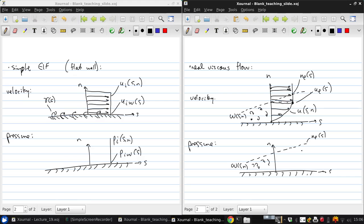So again, the pressure now will be roughly constant. So P E of S will just be the same as any value P of S and N. And here at the wall we have P W of S. And this is because V is much smaller than U.